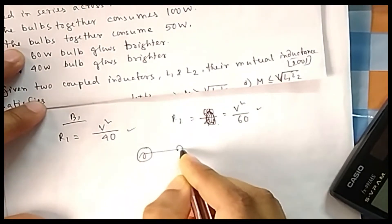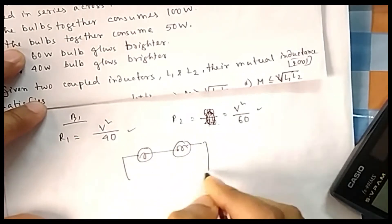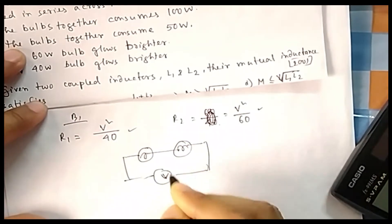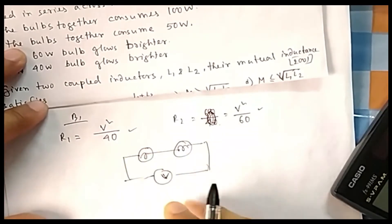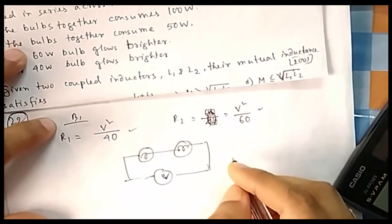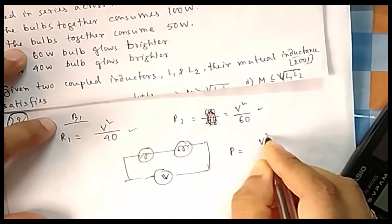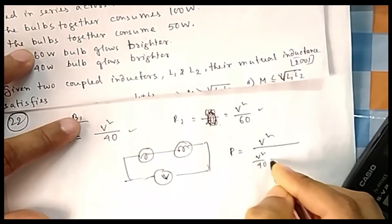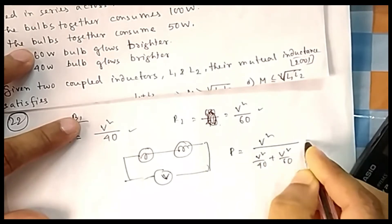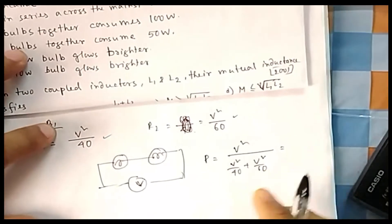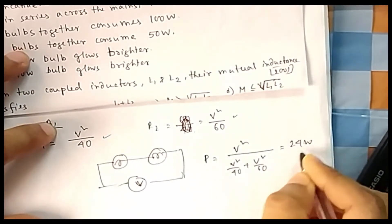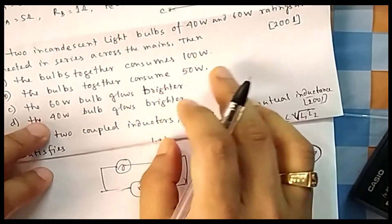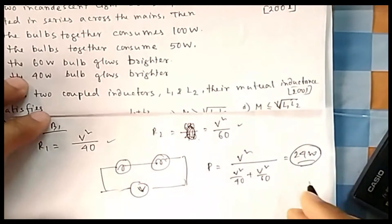Now if you connect both bulbs in series across source voltage V, the total resistance is R1 + R2. Total power consumed is V² / (R1 + R2). If you calculate this, you will find the total power is 24 watts. So together they consume only 24 watts.